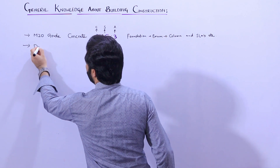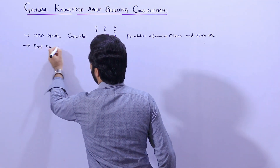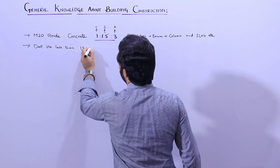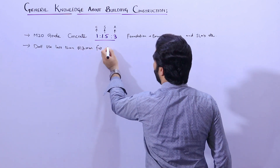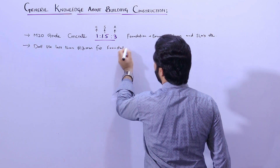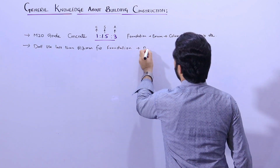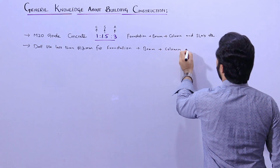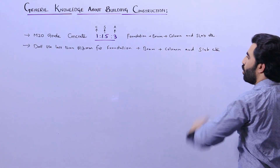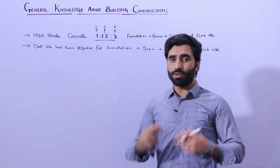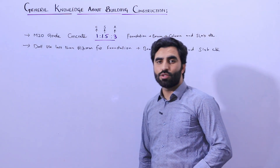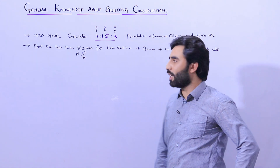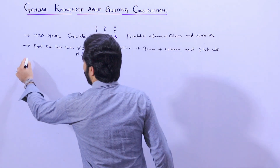The next point: for G plus one, do not use less than 12 millimeter diameter steel rod for foundation, beam, column, slab, etc. You can increase the diameter, but don't use less than 12 millimeter — or you can say half inch diameter of steel rod. This is very important.